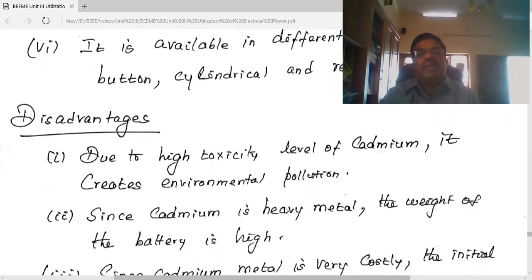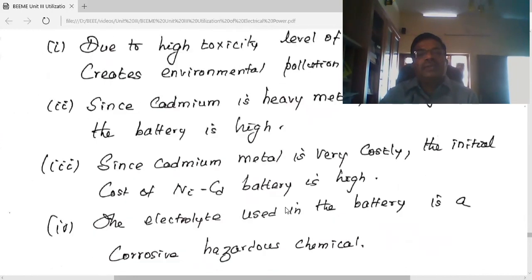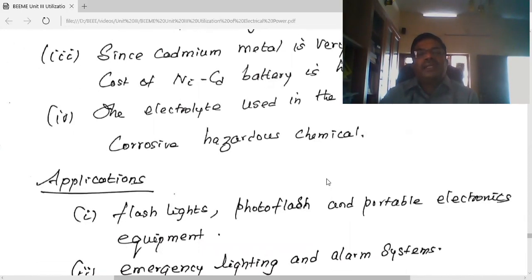Disadvantages include pollution, as cadmium is a heavy metal. Cadmium is also very costly. The electrolyte used in the battery is corrosive and hazardous.